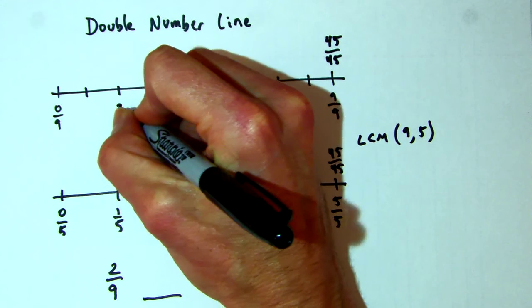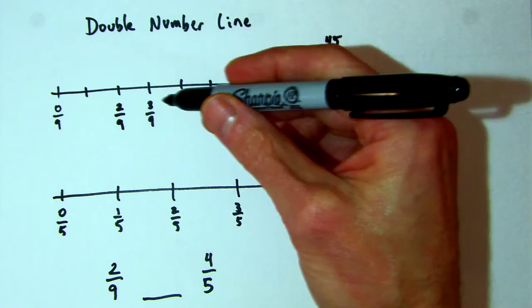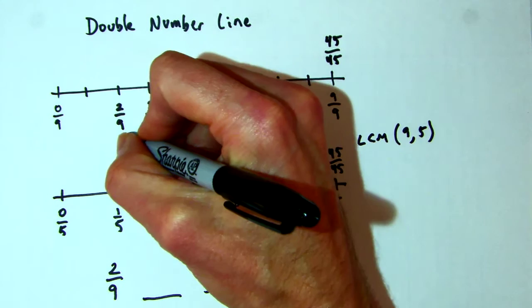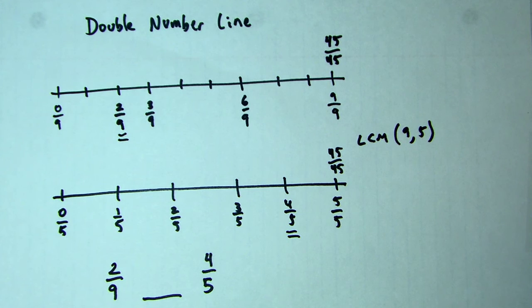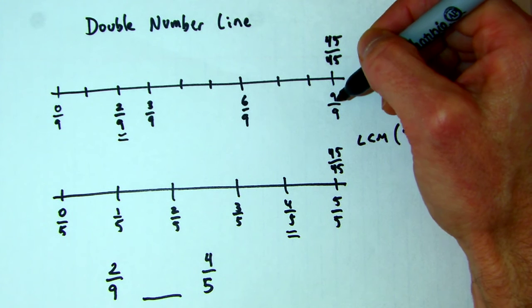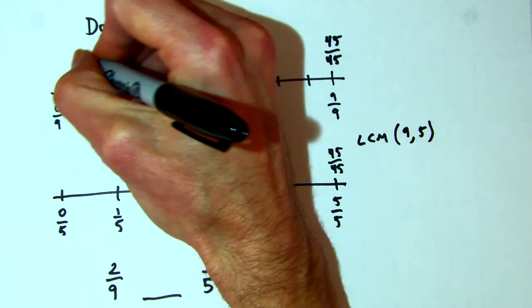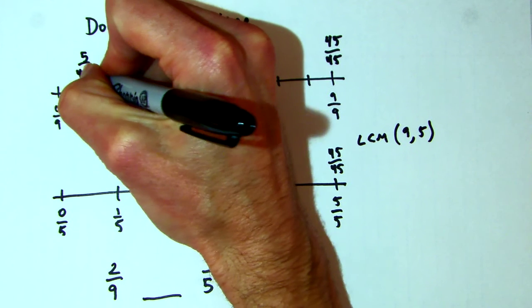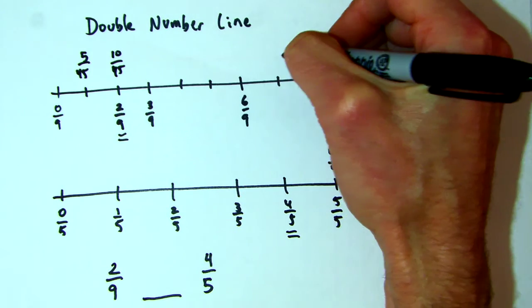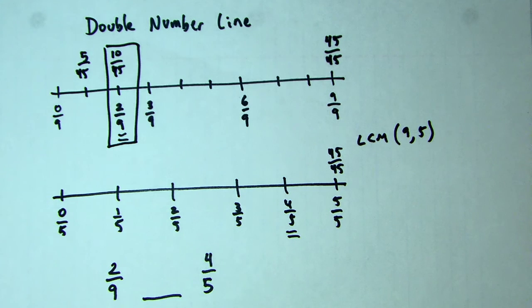Now what I'm looking for is how many 45ths is 2/9, and how many 45ths is 4/5? These are the values I'm working with. Each hop on the ninths is worth 5, because 5 times 9 is 45. So this is going to be 5/45, then 10/45, and 15/45, 20/45, 25/45, 30/45, 35/45, 40/45, 45/45. So the equivalent fraction for 2/9 is 10/45.